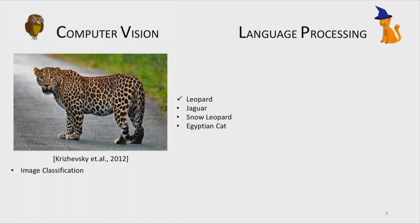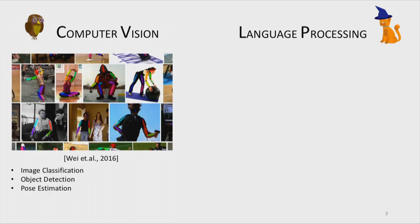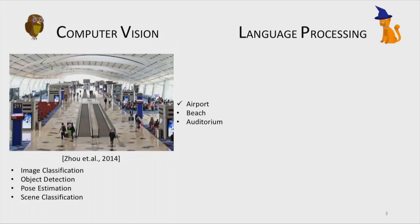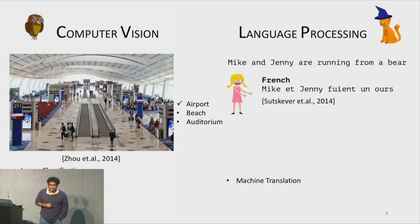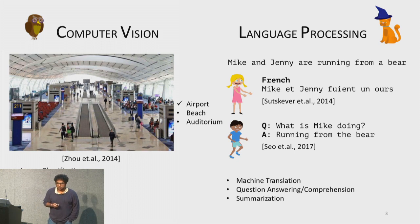Specifically in the computer vision community, given an image, we are now able to classify into one out of a set of labels, put a bounding box around an object of interest, estimate the pose of people in images, and classify what kind of scene we are looking at. On the language side, we are able to read a sentence, translate it from one language to another, answer questions about what we just read, and summarize things into shorter sentences.